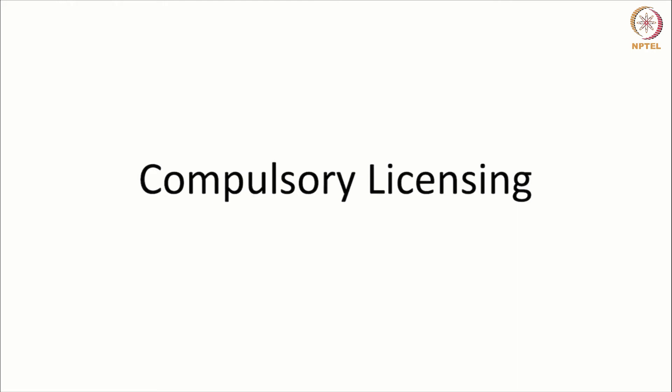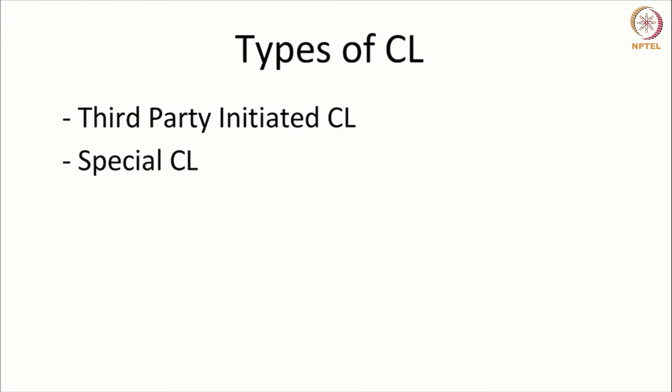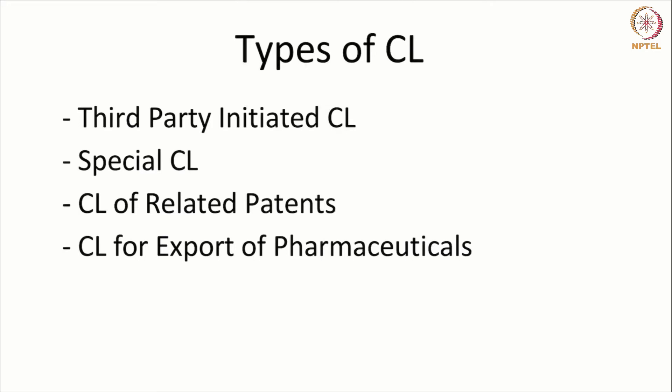Compulsory licenses are granted when there are situations which warrant their grant. Under the Indian Patents Act, there are four types of compulsory licenses that can be granted: a third-party initiated compulsory license (also referred to as a market-initiated compulsory license), a special compulsory license issued in special circumstances, a compulsory license of related patents, and a compulsory license for export of pharmaceuticals.